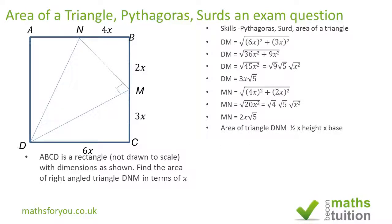Now the area of triangle DNM then becomes half times the height times base. And that's equal to half times 3x root 5 times 2x root 5. Now root 5 times root 5 will give us 5, and this 2 here we can cancel with the 2 there, so this will cancel off. So we end up with 15x squared units squared.